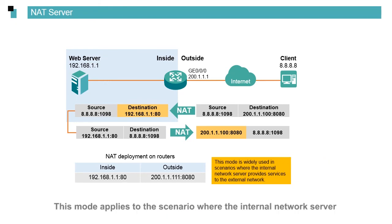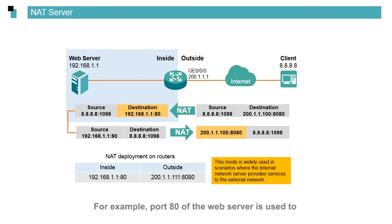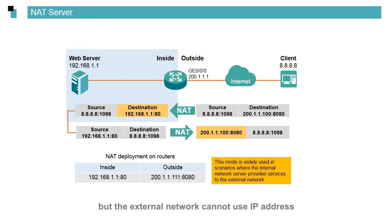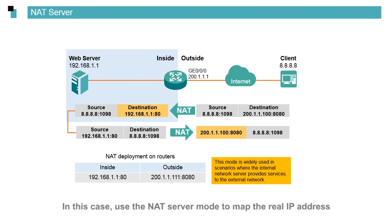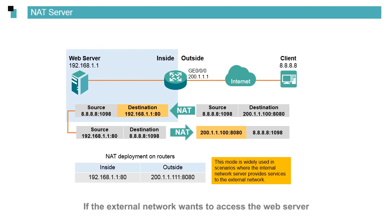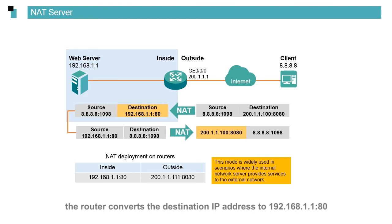The fourth type is NAT server mode, which applies to the scenario where an internal network server wants to provide services to external network users. For example, port 80 of a web server is used to provide services to the external network, but the external network cannot use the private IP address 192.168.1.1 to access it. In this case, use the NAT server mode to map the real IP address of the web server to port 80 of public IP address 200.1.1.1. If the external network sends a data packet to 200.1.1.100:8080, the router converts the destination IP address to 192.168.1.1:80, and data access succeeds.